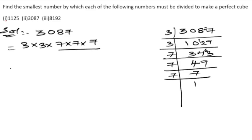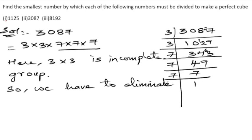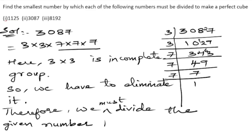Three appears only twice — 3 × 3 — which is an incomplete group. So we have to eliminate it. Therefore, we must divide the given number 3087 by 3 × 3, that is 9, to make it a perfect cube.